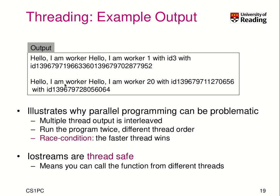Here we see example output: 'hello, I am worker 1 with ID 3' — and there's a lot of interleaved output. This looks a bit garbled, and it illustrates why parallel programming can be problematic. Multiple thread outputs are interleaved, and when you run the program multiple times, you get a different order. This is basically what we called a race condition — the faster thread wins the output. IO streams are thread-safe in that you can call them from different threads, but the output will be interleaved.